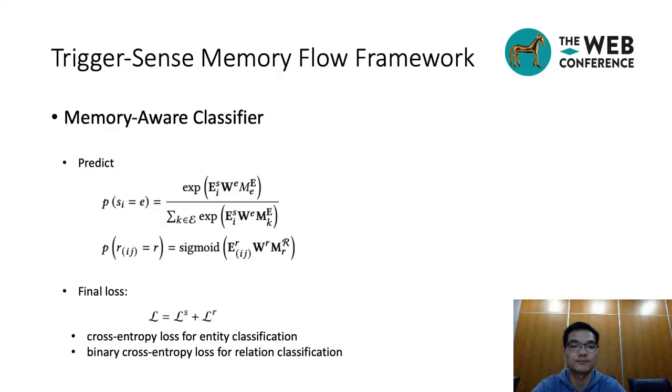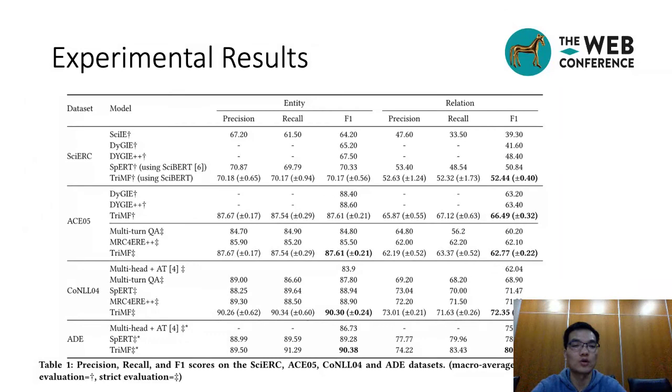The experimental results are shown in the table. Our model consistently outperforms the state-of-the-art models for relation extraction on all datasets. We attribute the improvement to three reasons. First, our model can share learned information between tasks through the memory module. Second, the trigger sensor module can enhance the relation trigger information. Lastly, taking a step further from introducing structure information through syntactic graphs, we distinguish the semantic and syntactic importance of words.